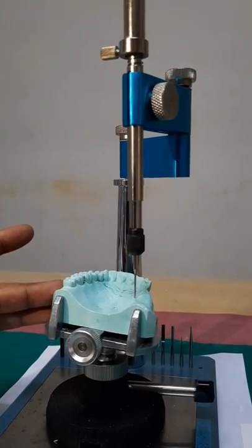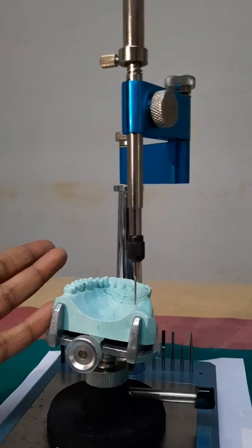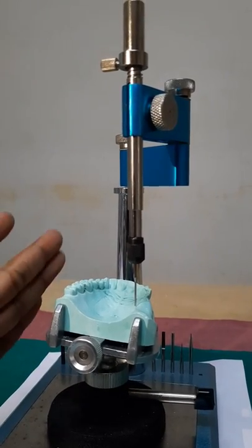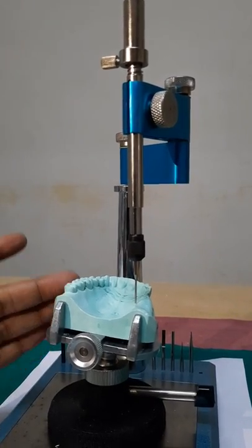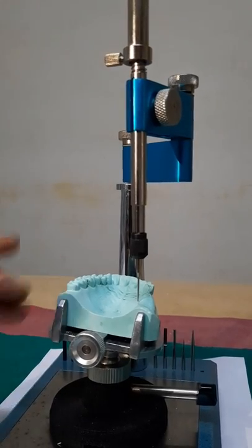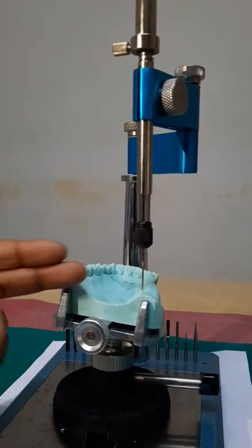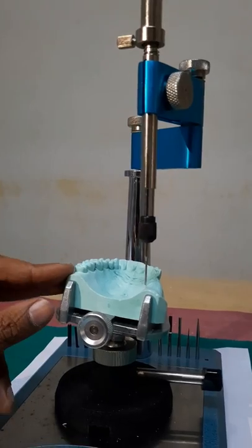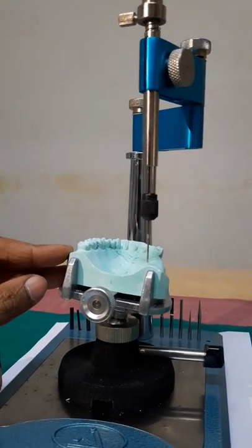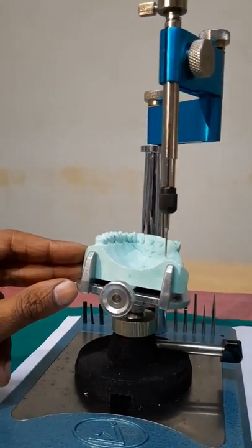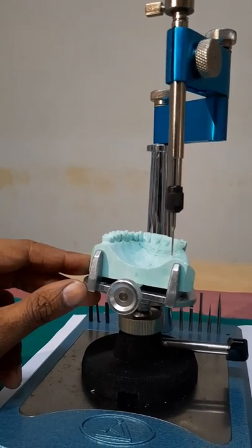If I haven't tripoded the cast, then I am going to lose the tilt of the cast, that particular tilt, because then you are not going to get that particular tilt whenever you bring it onto the survey table. And third thing is, it helps in recording the spatial orientation of the cast in a particular plane.